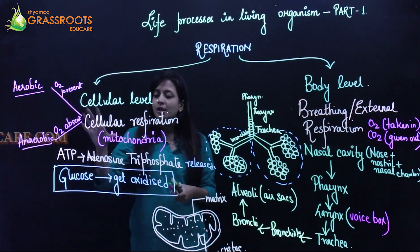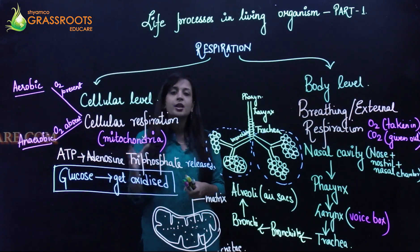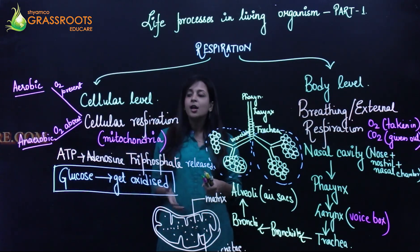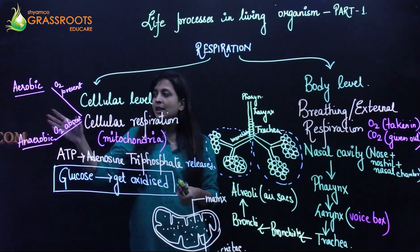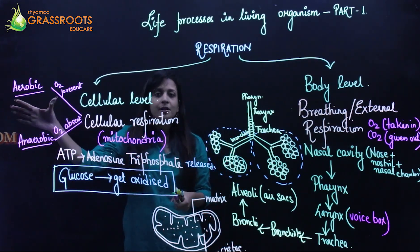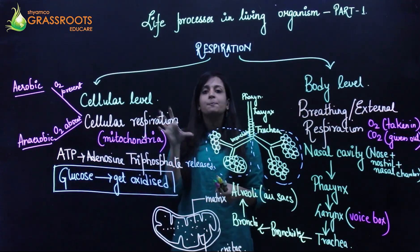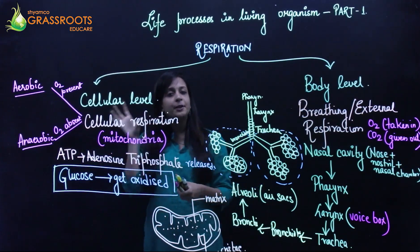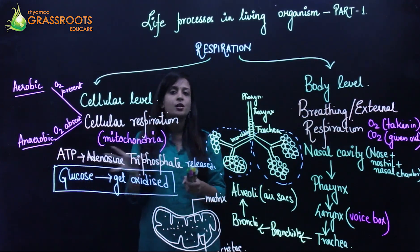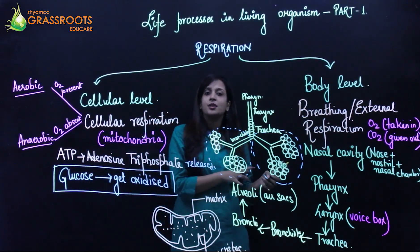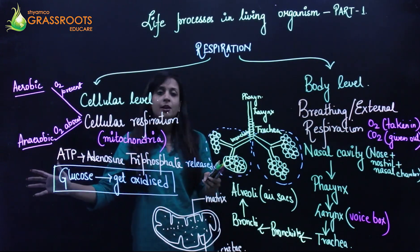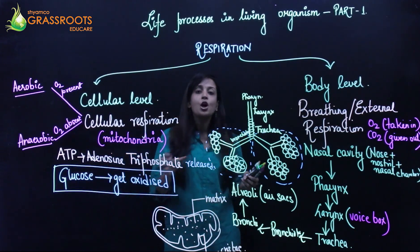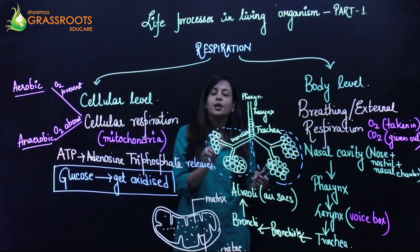In both aerobic and anaerobic respiration, glucose gets oxidized. However, in the case of aerobic respiration, the glucose is completely oxidized, whereas in anaerobic respiration the oxidation is incomplete.